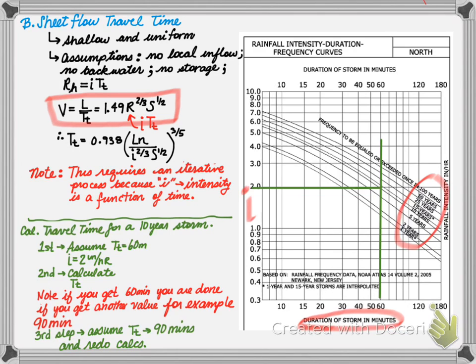It should be noted, if you get 60 minutes, you're done. If you get another value, for example, 90 minutes, you need to redo your calculation based on 90 minutes. So you would come back to this graph, go to 90 minutes, see where it hits the curve, go across, calculate your new intensity, plug it into the equation.